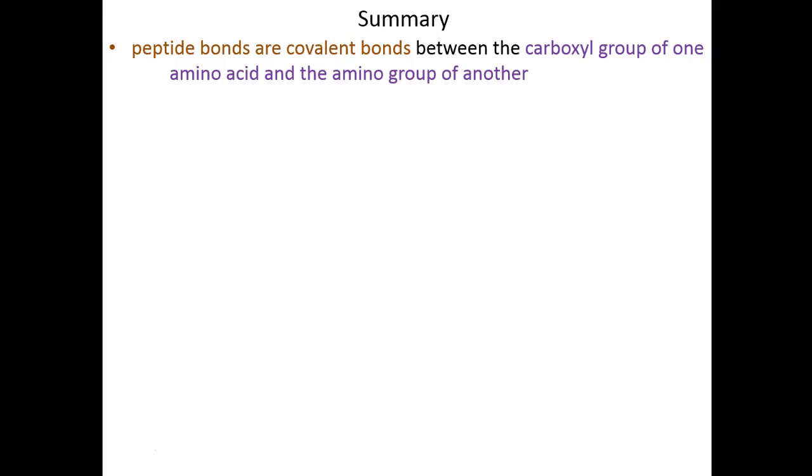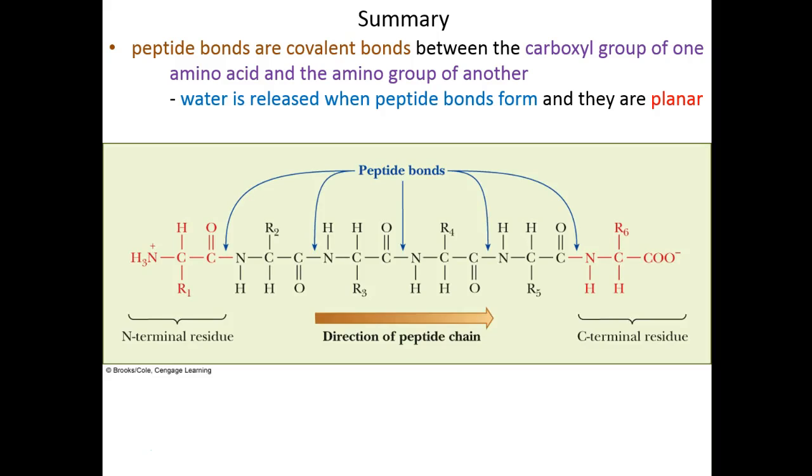To summarize: peptide bonds are covalent bonds between carboxy groups of one amino acid and amino groups of another, catalyzed by the ribosome. Water is released—a dehydration reaction—and the bond is planar with groups on both sides in the same dimension. We talked about the trans configuration of side chains to avoid steric interference and small peptides and their roles in cells.